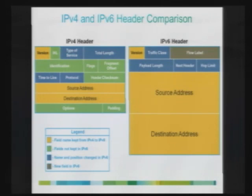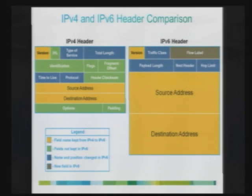In the case of IPv6, the base header is always 40 bytes long. If you want extensions, you use extension headers instead of IPv4 options. You can have additional extension headers defined after the base header. Because of that, there is no need for a header length field since the IPv6 header is always 40 bytes. Whatever is highlighted in green has been removed.